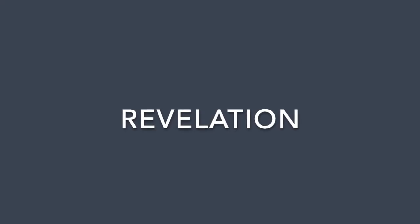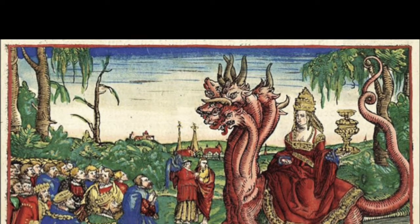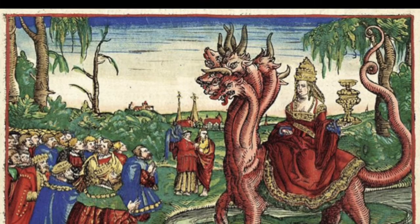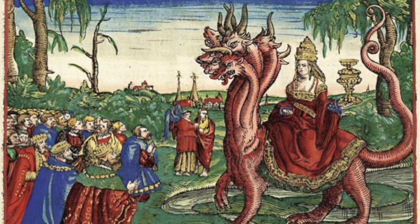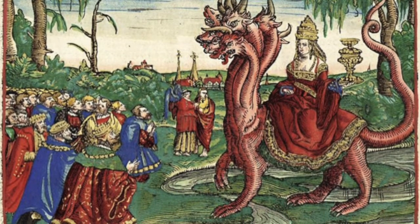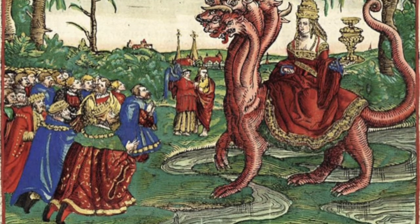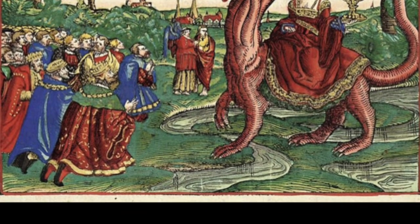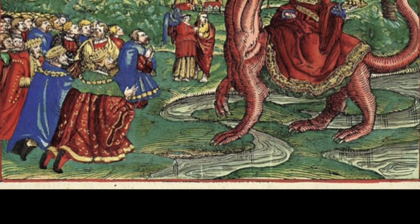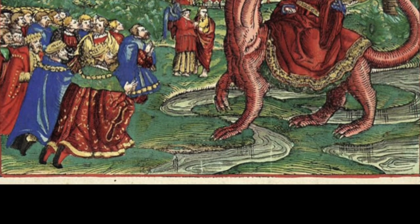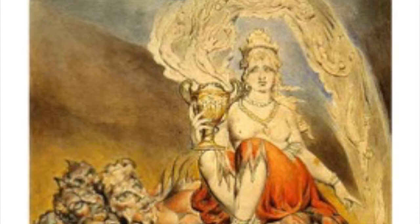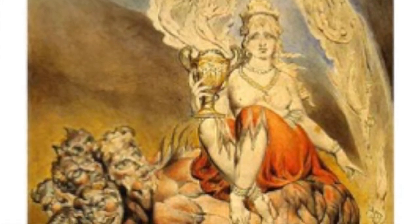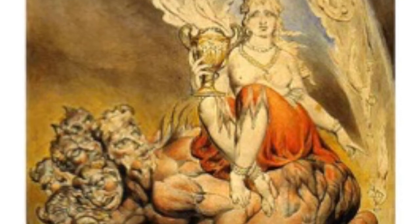We begin our course by looking at the Biblical origins of the theme of Apocalypse in texts such as the Book of Revelation, or the Revelation of John of Patmos, which is the final text of the canonical Christian Bible, and which has given us many of the themes and also many of the characters that we recognize in numerous illustrations, such as the images I'm showing you here by Lucas Cranach or by William Blake.